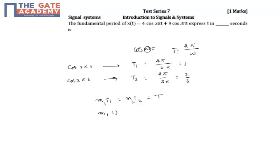m1T1 is 1, m2T2 is 2/3, equals T. So you have to choose the minimum number of integer values for m1 and m2 such that this equation holds good.